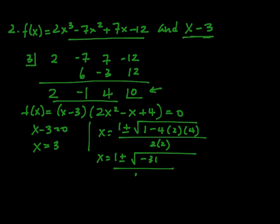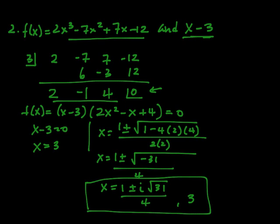Which is x equals 1 plus or minus the square root of negative 31, over 4, so x equals 1 plus or minus i times the square root of 31 over 4, and 3. And 31 we cannot take out of the radical. So that's my final answer.